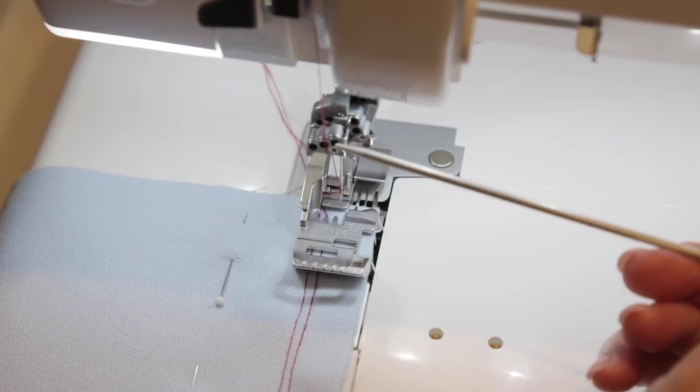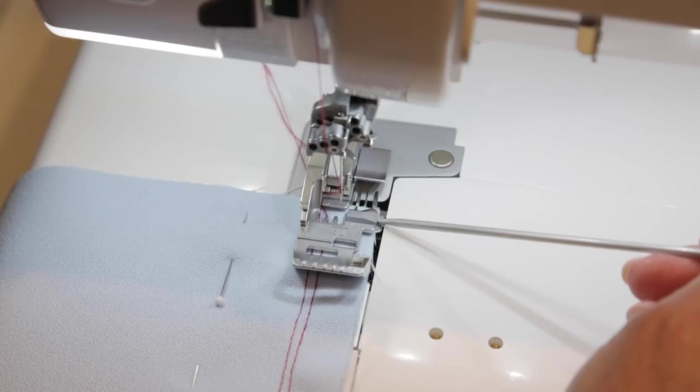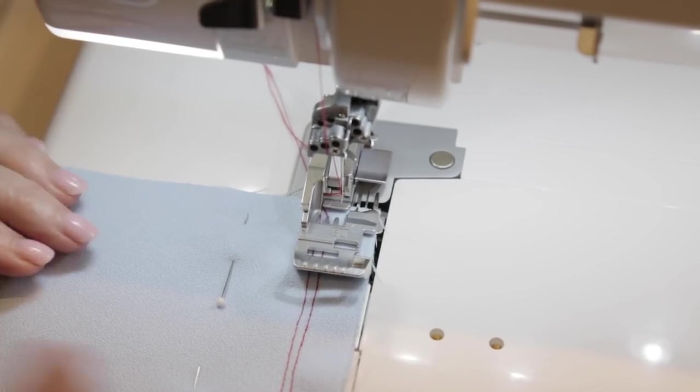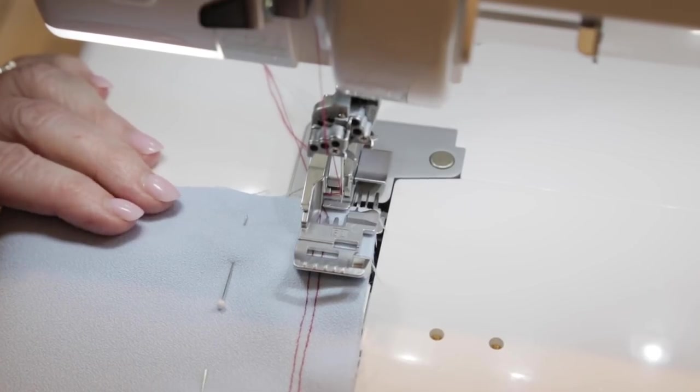This is the last one. I'm in my right chain stitch needle position. Again, lined up right here, and I'll do my best to keep the stitching straight so that we can check out and see if we have a 3/8 inch seam allowance.